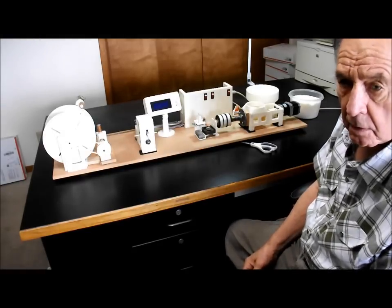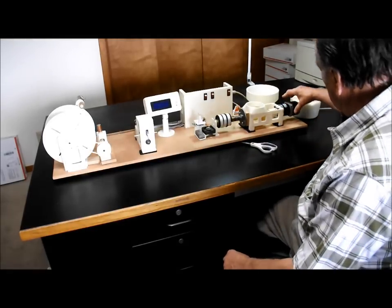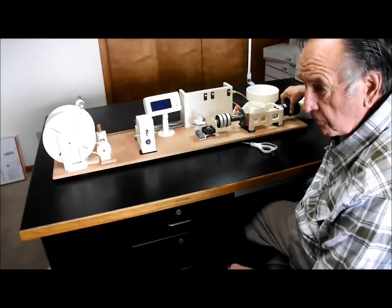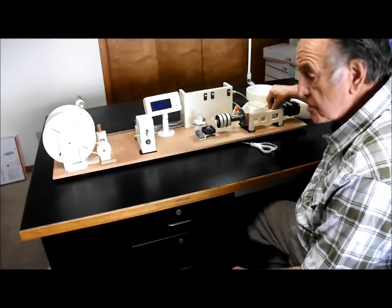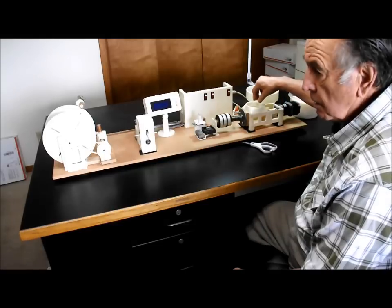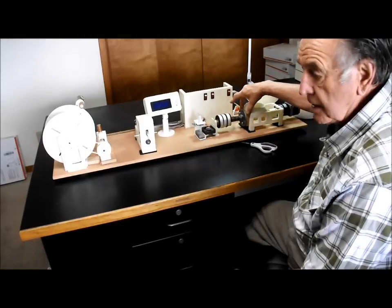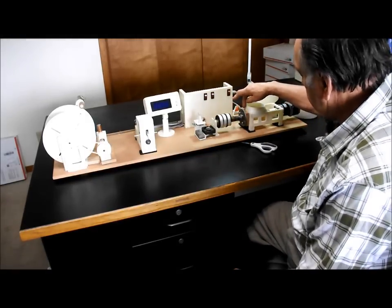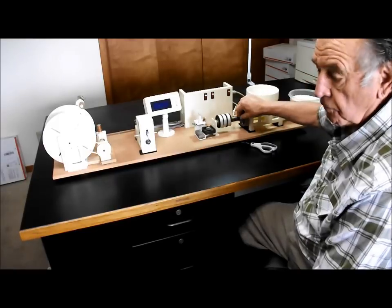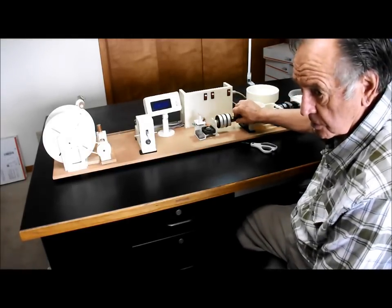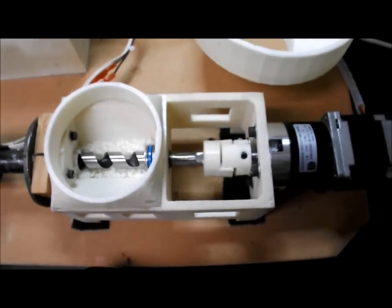The extruder is made with a Nema 23 stepper motor, 150 kilogram per centimeter torque, and from there we have flexible couplers, the auger shaft, the thrust bearing, and we have an oak block insulation. This is a standard half inch pipe floor flange and it's a four inch black pipe half inch nipple coupler, heat band, a thermistor, and a brass nozzle.